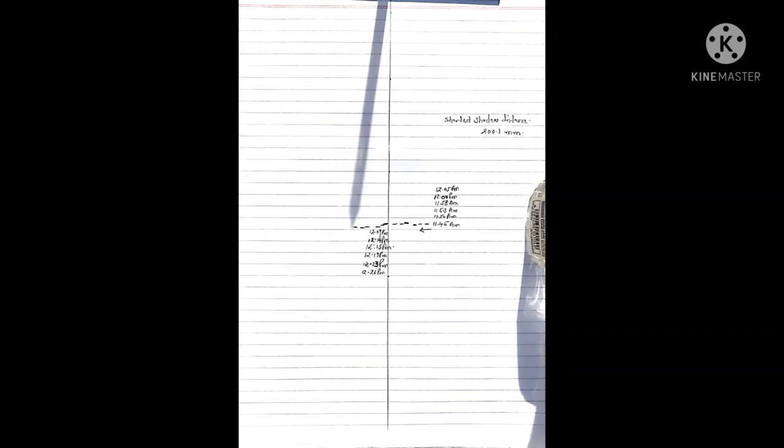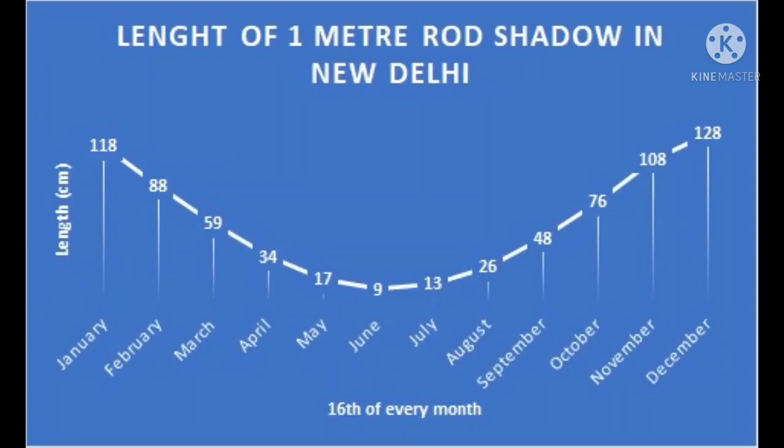This reading is taken at Samrat Yantra. As the sun starts moving towards the Tropic of Cancer, from the south, the shadow length decreases. Similarly, as the sun moves towards the Tropic of Capricorn, the length of the shadow increases. This change in shadow's length shows the month and the day of the year. This can be seen in the following graph, where shadow length of 1 meter rod is shown for every 16th day of the month in New Delhi.